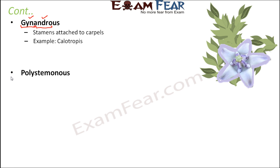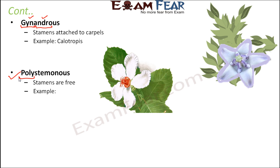The next type is polystemons, where the stamens are free. Wherever you have the word 'poly,' that means many individual stamens. The stamens are free — they are not attached to the calyx, corolla, or carpels; they are not attached to anything. As you can see in this example, the petals are all free, the sepals are all free, and the gynoecium is separate, so the stamens are free — this is polystemons.